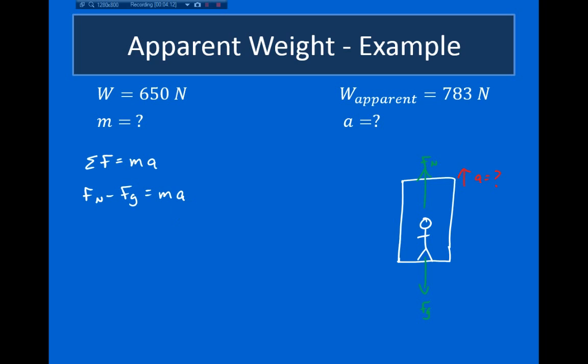Now I'm trying to solve for my acceleration. I have a is equal to the normal force minus the force due to gravity divided by mass. My normal force is nothing but my apparent weight, so I know the normal force. The force due to gravity that's exerted on me is my weight, so I know this. But I still need to find my mass.